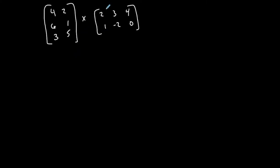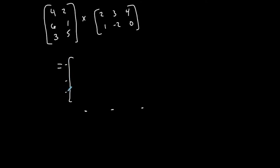I expect my solution or product to be a three by three matrix. I like to put dashes — three columns and three rows — just to represent how many rows and how many columns my final product will have. I might need some space here because I'm going to show all my work. Let's start with the first element — this element here in the first row and first column of my product.